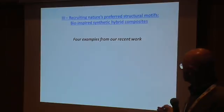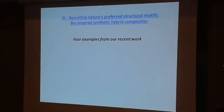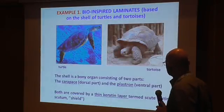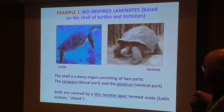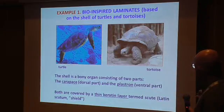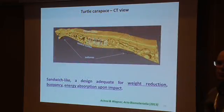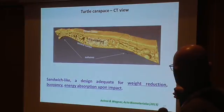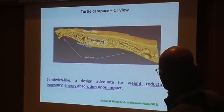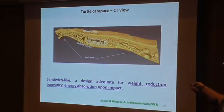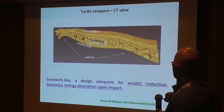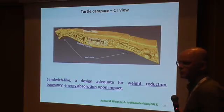Now the last part of this lecture: bio-inspired synthetic composites. I'll give you four examples from our current and recent work. The first is the turtle or tortoise shell, which is a body organ and a layered structure. It has a carapace on top and a ventral part. A computer tomography view shows it is a laminate: a dorsal cortex, a cancellous region, and a ventral cortex — essentially a sandwich structure designed for weight reduction, buoyancy, and energy absorption under impact.